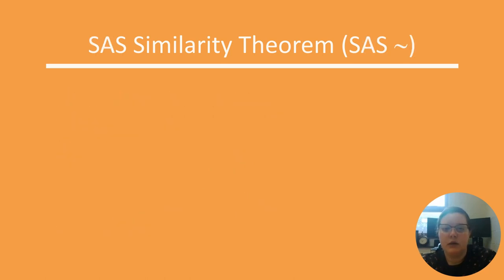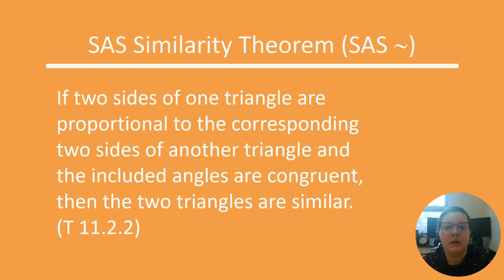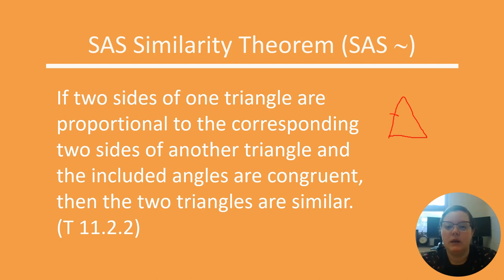Our final theorem is the side-angle-side similarity theorem. If two sides of one triangle are proportional to the corresponding two sides of another triangle, and the included angles are congruent, then the two triangles are similar. Notice that it must be the included angle — the angle between the two proportional sides. It cannot be either of the other angles; it needs to be the included angle.